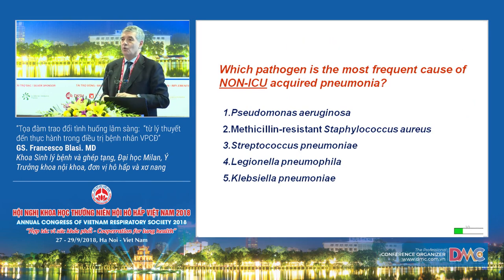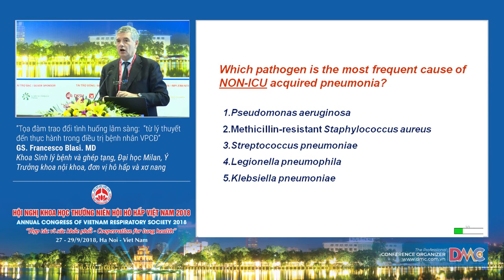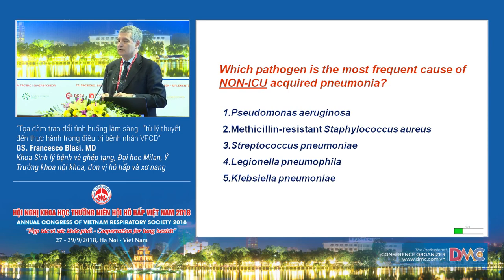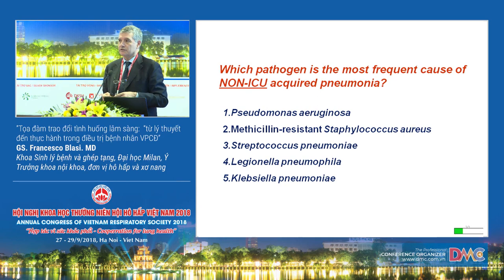Another question: which pathogen is the most frequent cause of non-ICU community-acquired pneumonia? One, Pseudomonas aeruginosa; two, methicillin-resistant Staphylococcus aureus; three, Streptococcus pneumoniae; four, Legionella; five, Klebsiella.